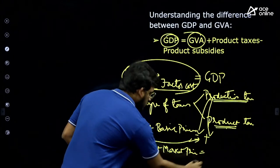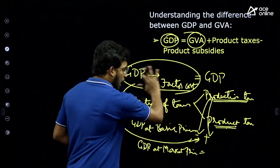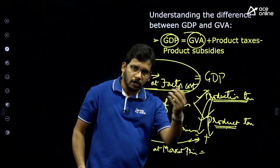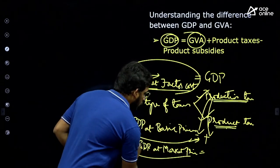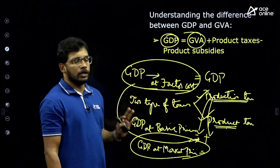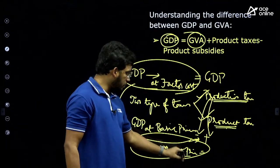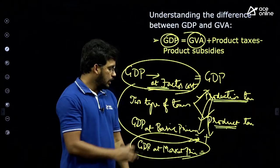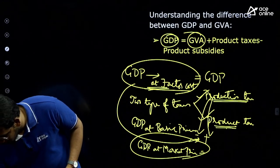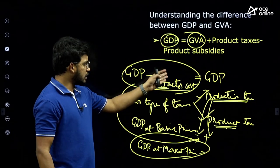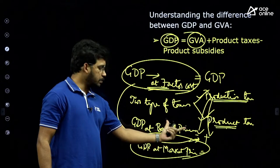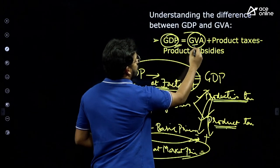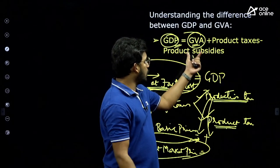GDP at market price is what we follow currently. Before 2014 we followed GDP at factor cost, but now we follow GDP at market price. So when someone says 'GDP,' it means GDP at market price. GVA is Gross Value Addition — it is essentially GDP at basic price, or even GDP at factor cost: the actual value of production before paying taxes. Whatever you produce, multiplied by price, without including taxes.